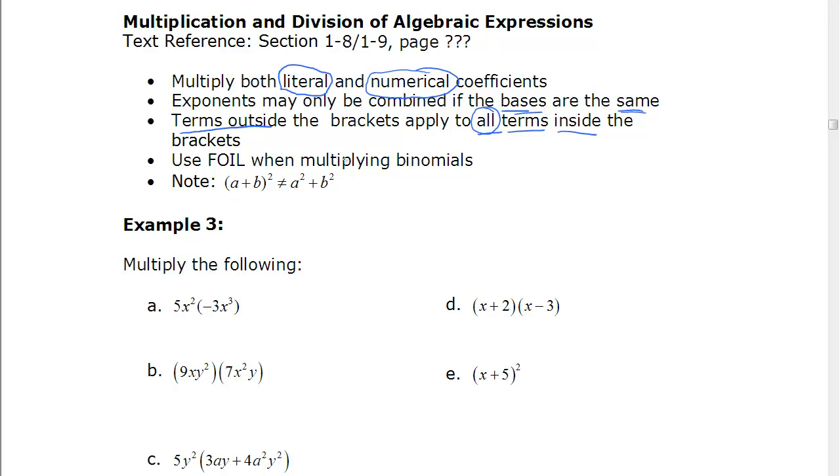We use the FOIL method when we're multiplying binomials. So what that means is if we have a binomial, binomial means two terms. So if we have something like x plus 2 and x minus 3, we use the FOIL method. First, outside, inside, and last. Basically what it means is everything in the first bracket gets multiplied with everything in the second bracket. The x gets multiplied by the x, the x gets multiplied by the 3. The 2 gets multiplied by the x, and the 2 gets multiplied by the 3. So that's the FOIL method, or double distributive property. Just remember, everything in one bracket gets multiplied with everything in the other bracket.